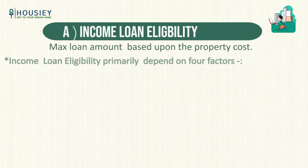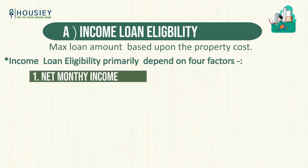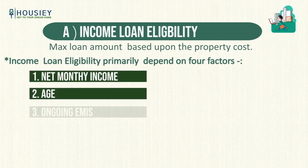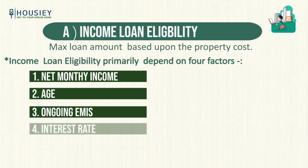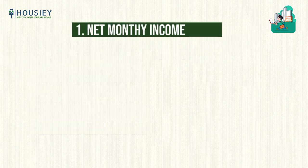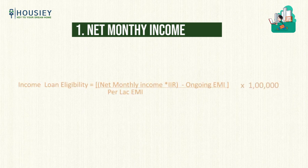Income loan eligibility primarily depends upon four factors: net monthly income, age, ongoing EMIs, and the interest rate. The income loan eligibility formula is: Income Loan Eligibility = (Net Monthly Income × IIR − Ongoing EMI) / Per Lakh EMI × 1 lakh.